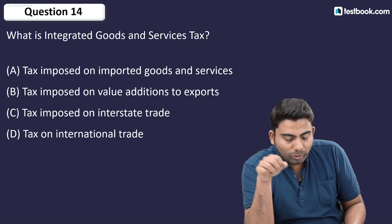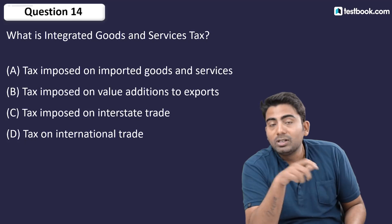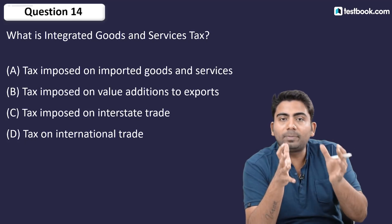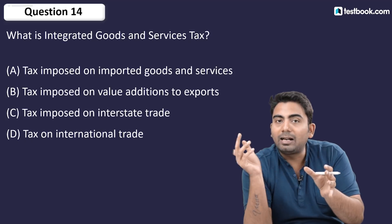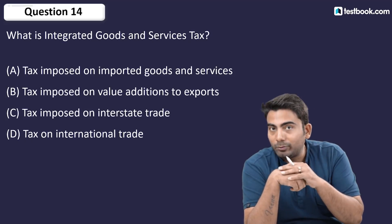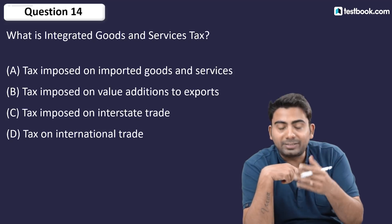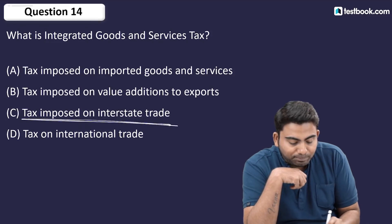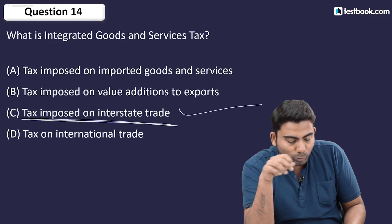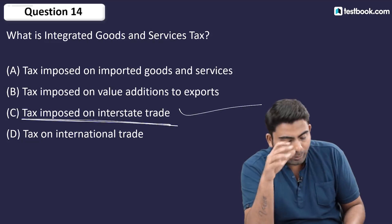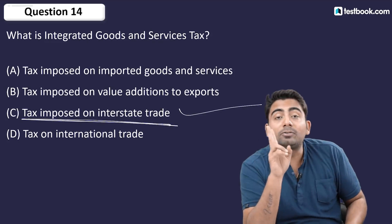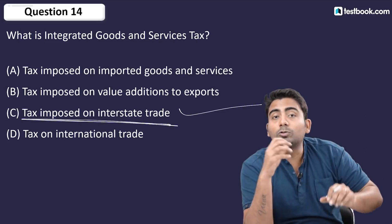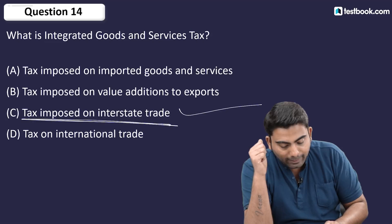Question number 14: What is Integrated Goods and Service Tax? IGST applies when goods are manufactured in one state — say Uttar Pradesh — and sold in another state like Haryana. This is called inter-state trade. The answer is: tax imposed on inter-state trade. Note: intra means within the same state, and inter means between different states.